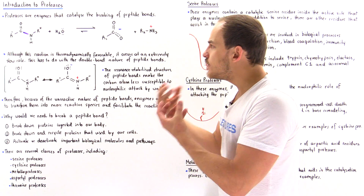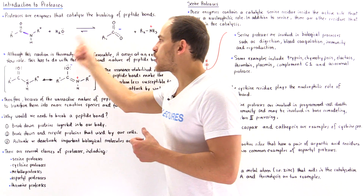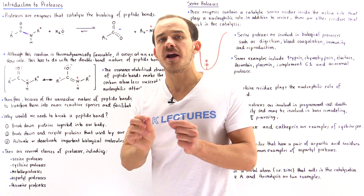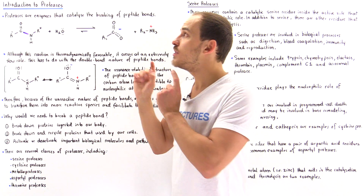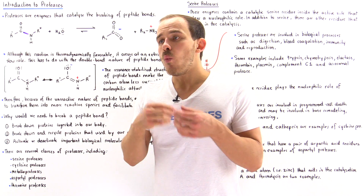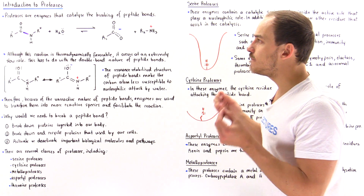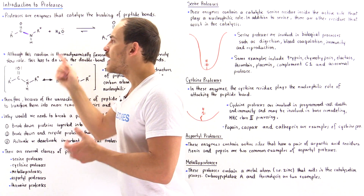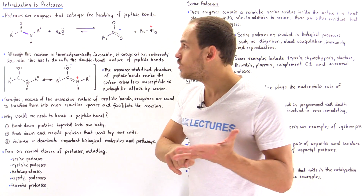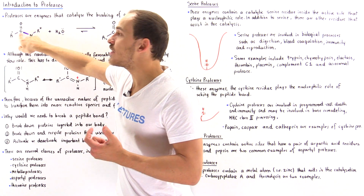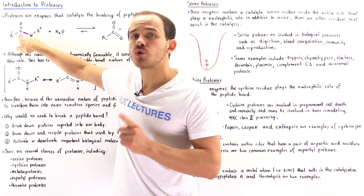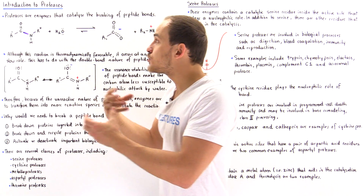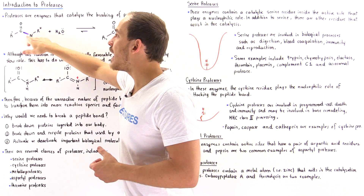This implies the products are lower in energy and more stable than the reactants. So even though this reaction is thermodynamically favorable, it doesn't take place at a very high rate without the protease enzyme. Water by itself is not a strong enough nucleophile to attack the carbon, and the carbon is not a strong enough electrophile. This has to do with the strength of the amide bond.